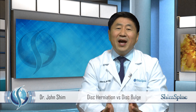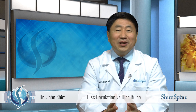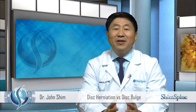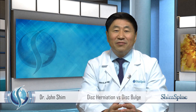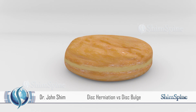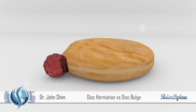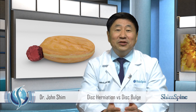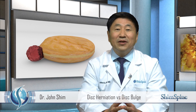If I had to describe a disc herniation, the model I would use is that of a jelly donut. We've all eaten jelly donuts, we've all pressed on the center, we've all watched the jelly come out the side. Well, that analogy of the jelly donut is a perfect analogy of a disc herniation.